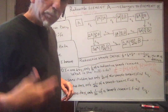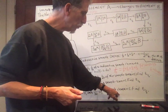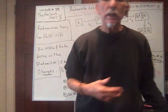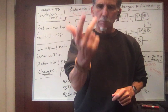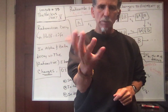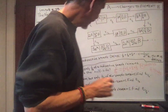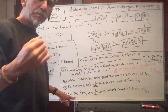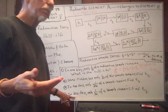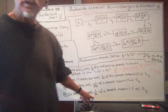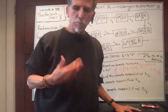One more problem of this type: in 200 days, only one-thirty-second of a sample remains. What's the half-life? One-half multiplied five times equals one-thirty-second, so there are five decays in 200 days. Five boxes of candy cost $200 — divide by five — the answer is 40 days. The half-life is 40 days.